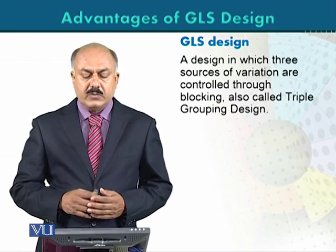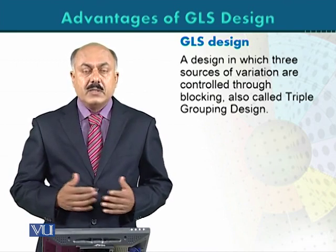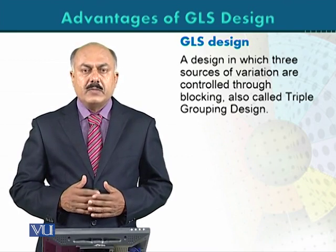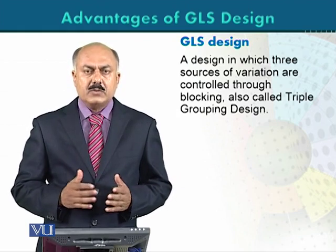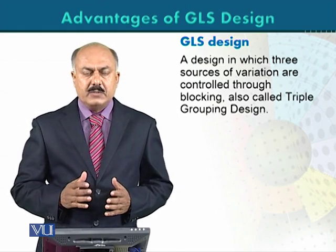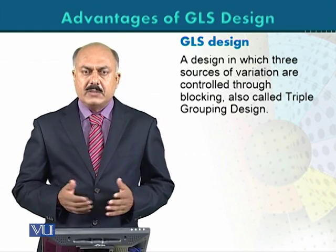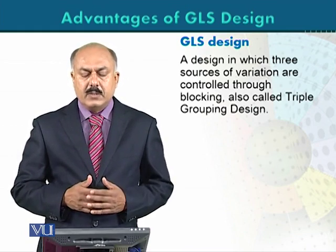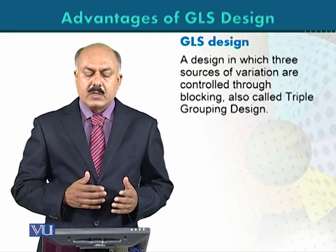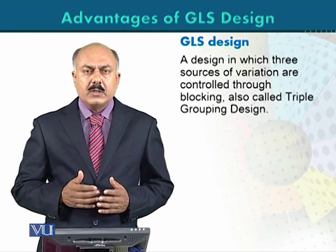A Greco-Latin square design is a design in which three sources of variations are controlled through blocking. This design is also called a triple grouping design. So, the Greco-Latin square design controls the treatment by three sources of variations through blocking. This means more variations can be controlled, and the experimental error can be reduced by controlling more sources of variation.